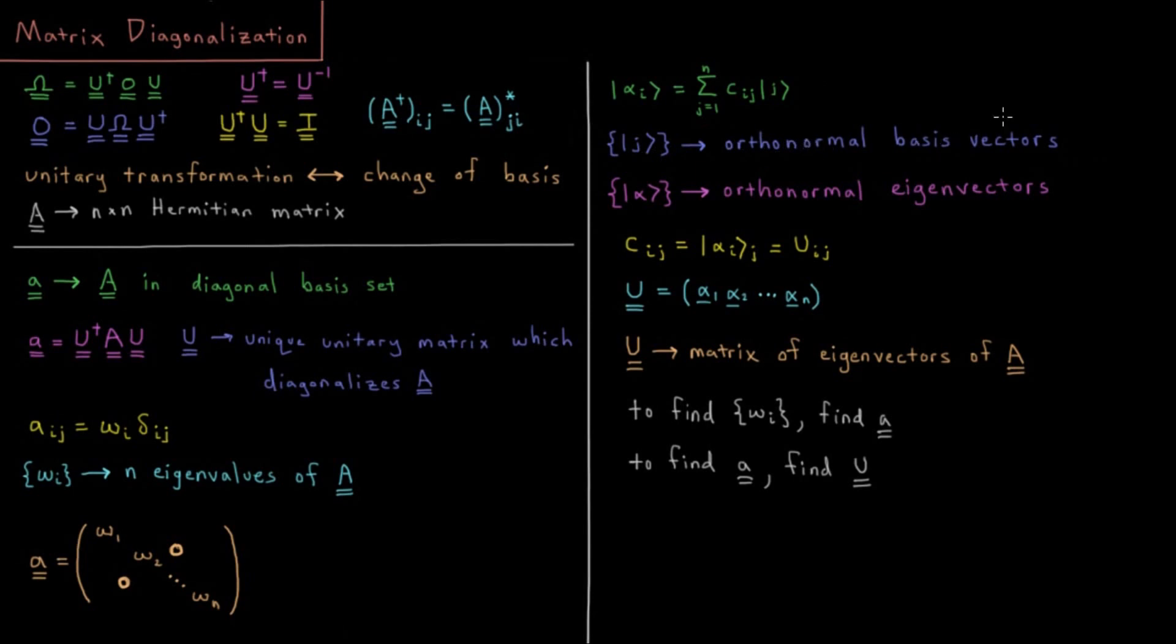So j is a bunch of orthonormal basis vectors, alpha are all the orthonormal eigenvectors of our matrix. So Cij of the jth element of the ith eigenvector is going to be equal to some matrix Uij. And this is actually going to be a unitary matrix, which is a matrix of all of the eigenvectors of A. So each column in this matrix is going to be an individual eigenvector of A.